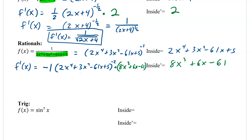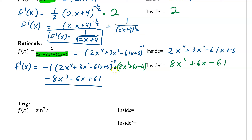Here's what happens with rationals: the part that you multiplied becomes our new numerator, and it gets a negative. I distribute that negative to all terms and put them on top: negative 8x cubed minus 6x plus 61. Draw the line. Then the denominator expression goes on the bottom squared because it had a negative exponent. So this is how you deal with rationals and chain rule.